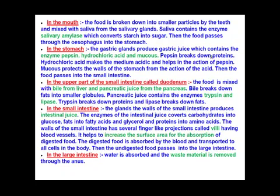Pepsin breaks down proteins, so while digestion of carbohydrates starts in the mouth, digestion of proteins starts in the stomach. Pepsin breaks proteins down into simpler molecules called peptones and peptides. Hydrochloric acid makes the medium of the stomach acidic, which is essential for pepsin to work properly.